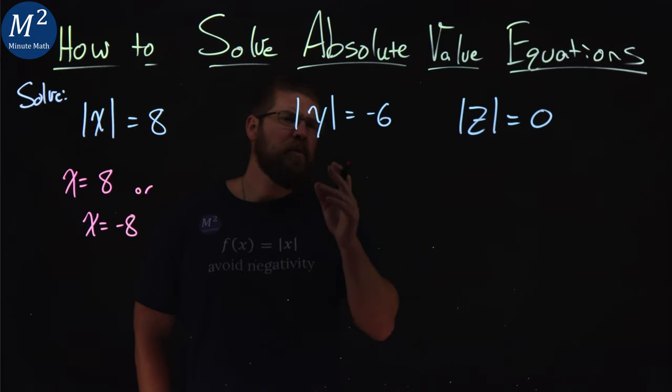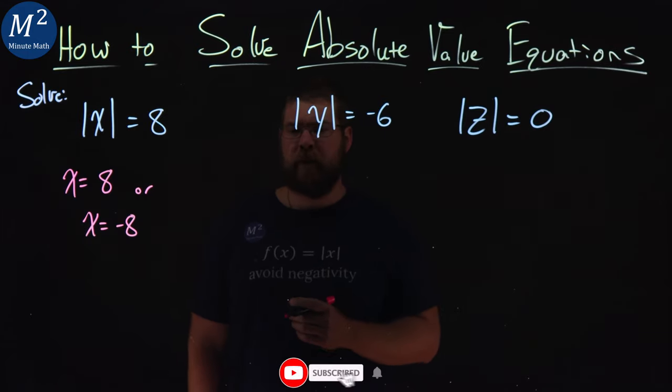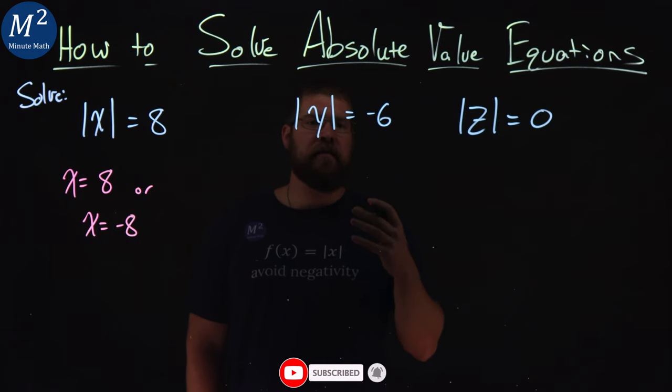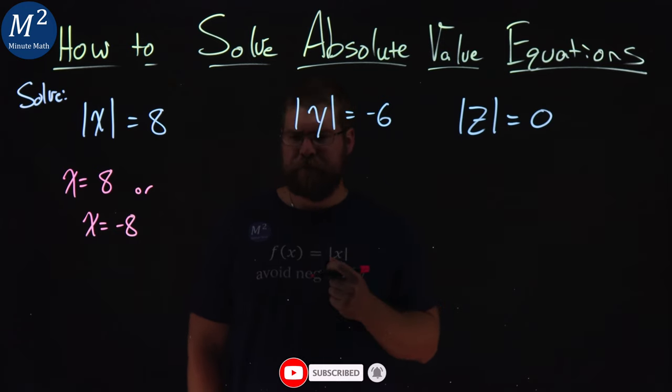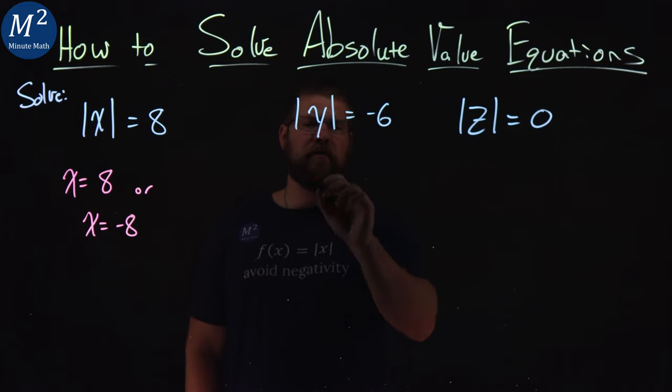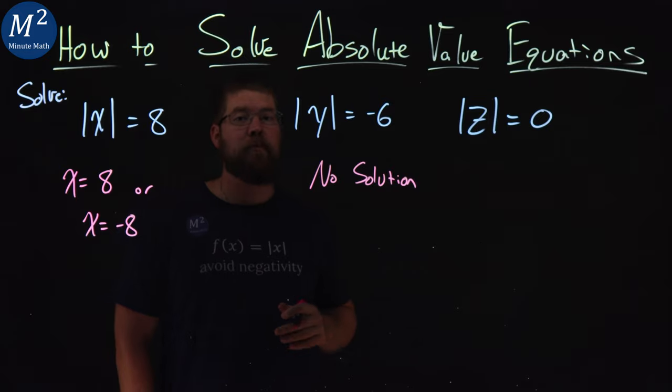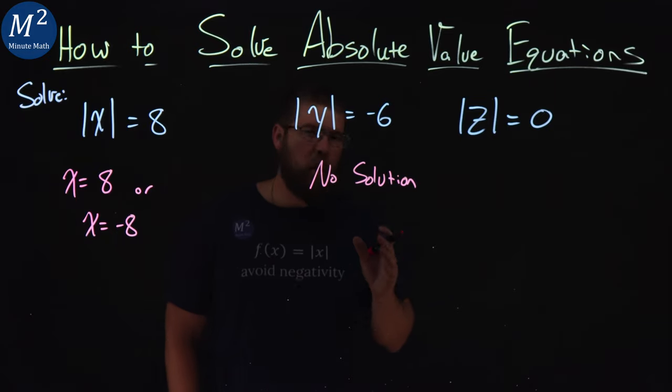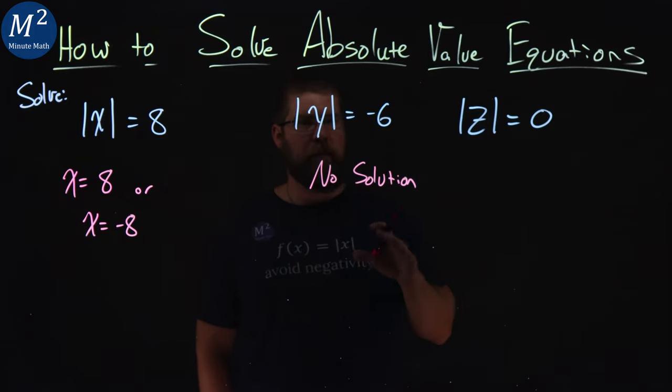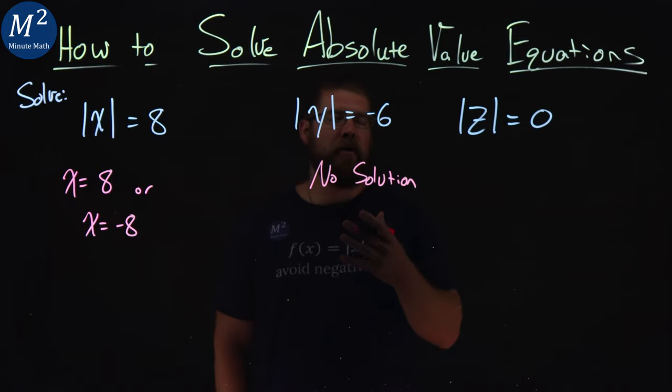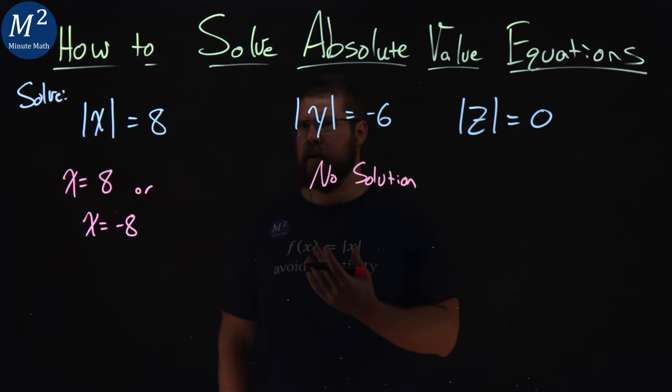Now, this one's a little tricky. Which value has a distance of negative six? The answer is no solution. Because whenever we take the absolute value of a number, it always has to be a positive number, a positive distance. We're not counting a negative distance from zero.